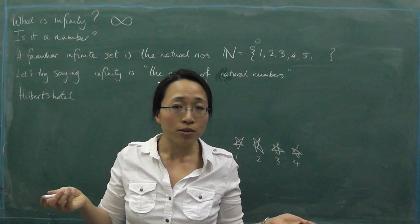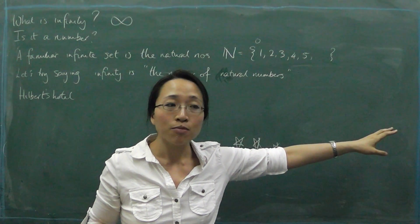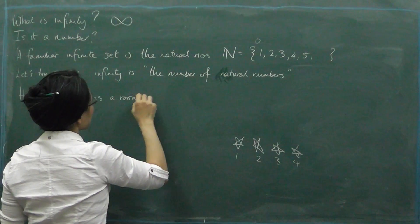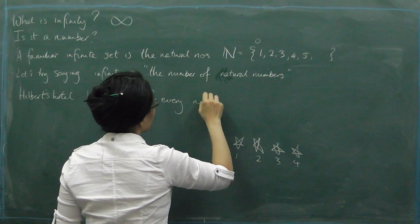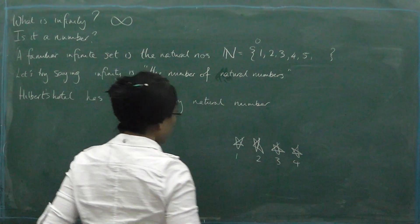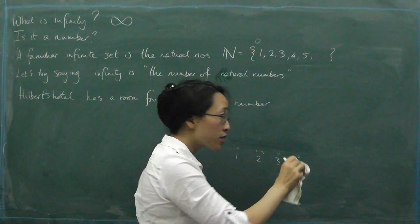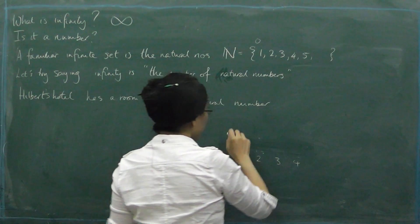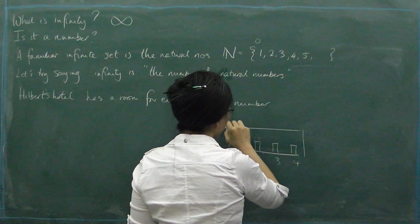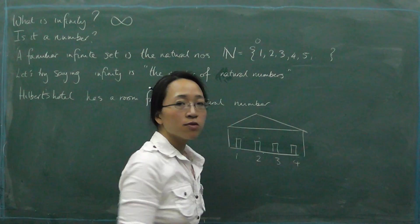Hilbert's Hotel has an infinite number of rooms. Because it's a hotel, the rooms have numbers — one, two, three, four, five — going on forever. There's no highest number; there is a room for every natural number. Suppose this were a hotel with just four rooms — not a very big hotel, but sometimes small hotels are nice.